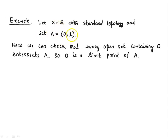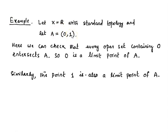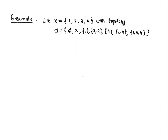Similarly, we can claim that 1 is also a limit point of A, because any open set containing 1 also intersects the set A. So in this set A, both 0 and 1 are limit points of A.